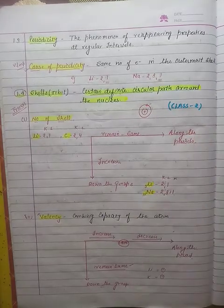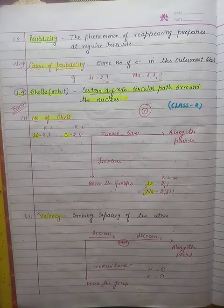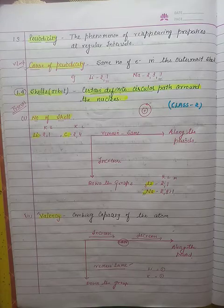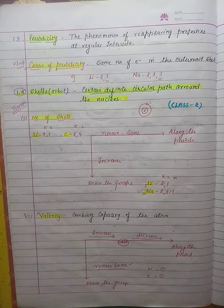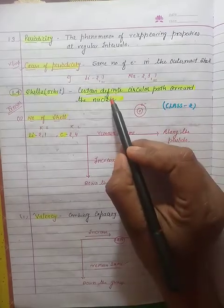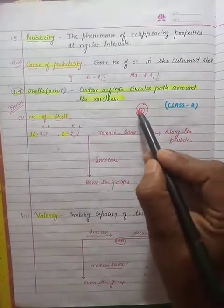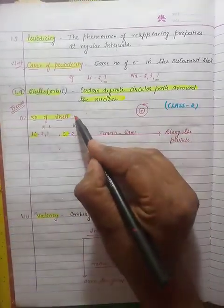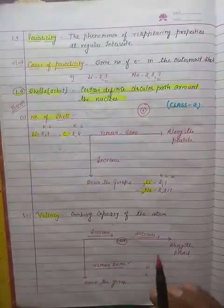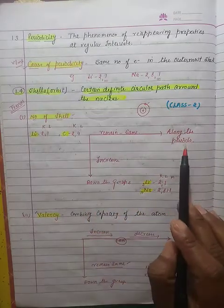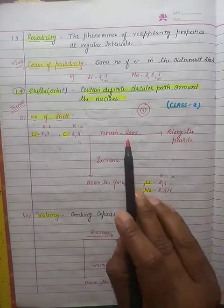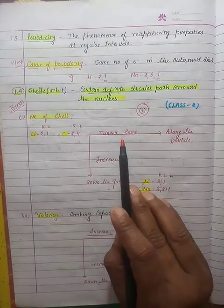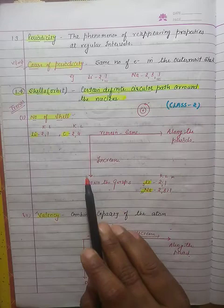Hello everyone, we are going to start a new topic: 1.4 - Shells. As you all know, a shell is a certain definite circular path around the nucleus in which electrons revolve. Here we will discuss the number of shells. As we go along the period, the number of shells remains the same, but as we go down the group, the number of shells increases.